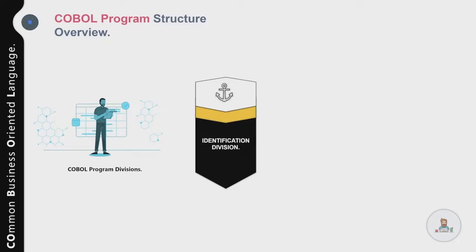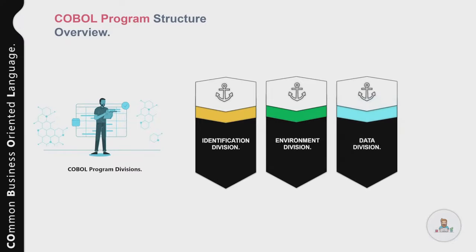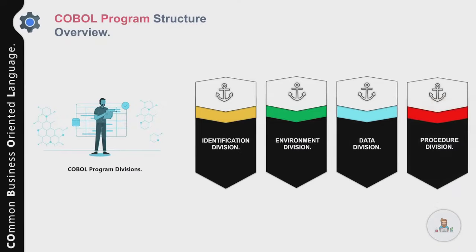The first division is the Identification Division, used to identify the program to the operating system and for documentation purposes. The second is the Environment Division, used to specify the file name and describe the specific computer equipment to be used by the program. The third is the Data Division, used to describe the input and output formats and define any constants and work areas necessary for processing.